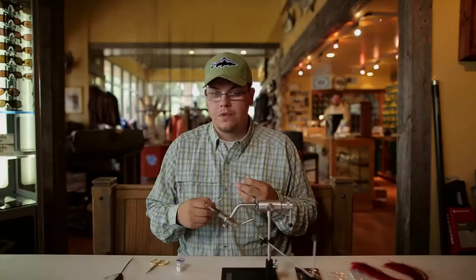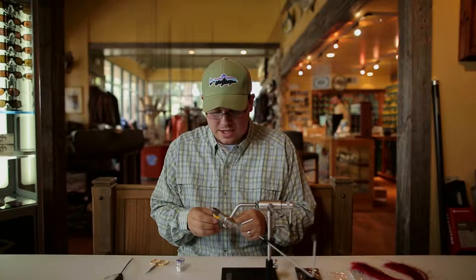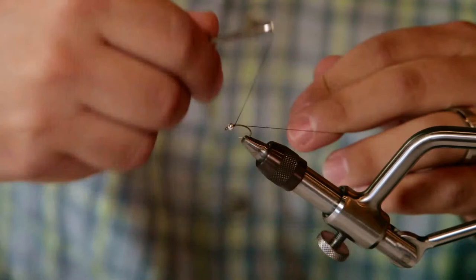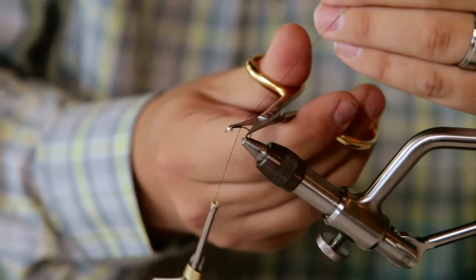So how I'm going to start this is with any fly, I'm going to start with my base thread, UTC 140 denier in black. I start my thread wraps and I come halfway down the shank, cut the excess.